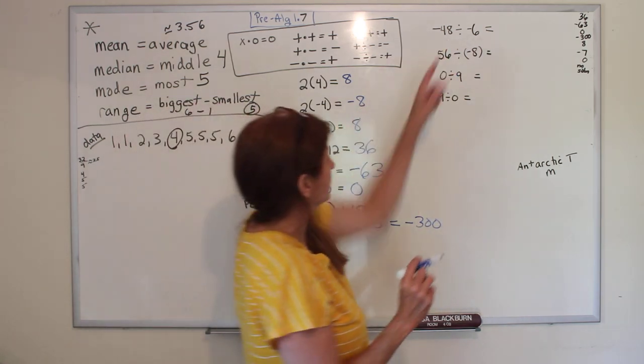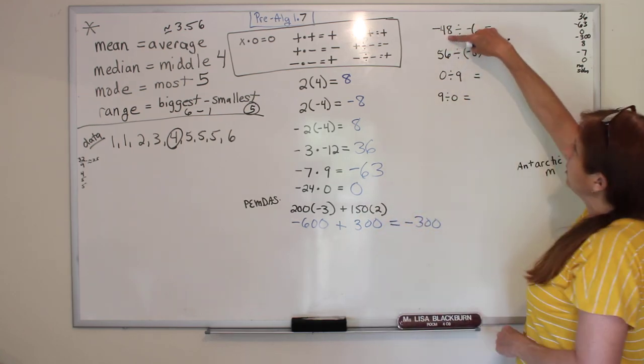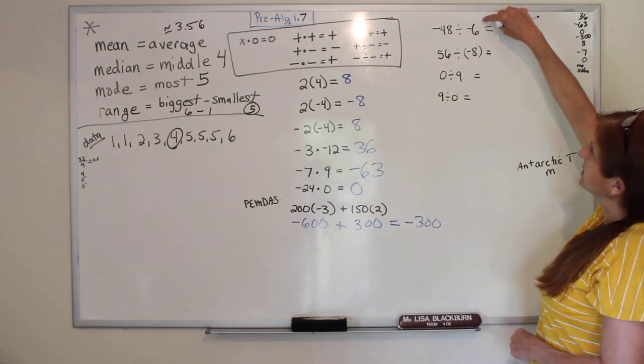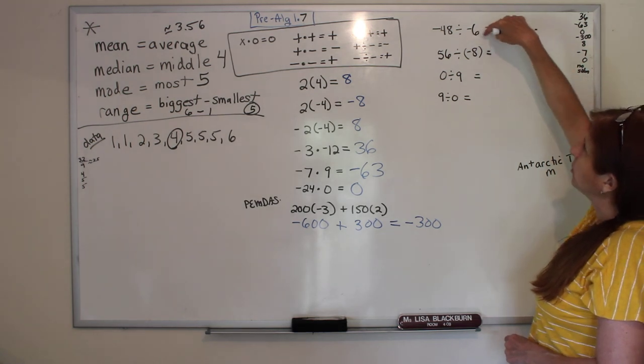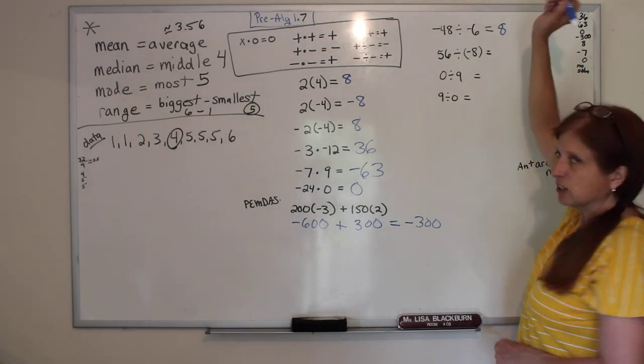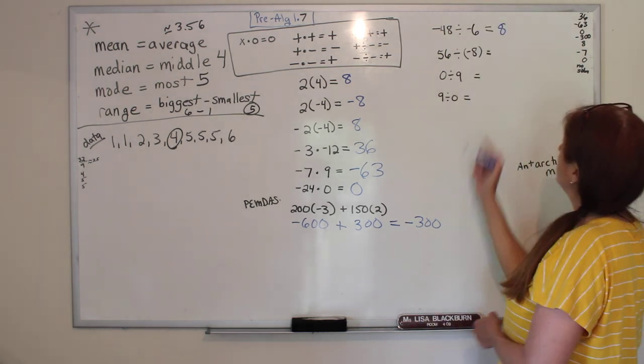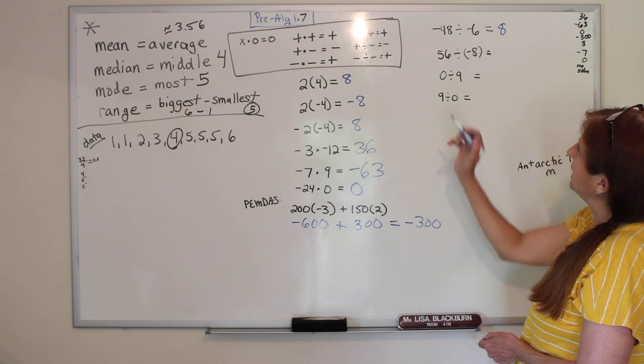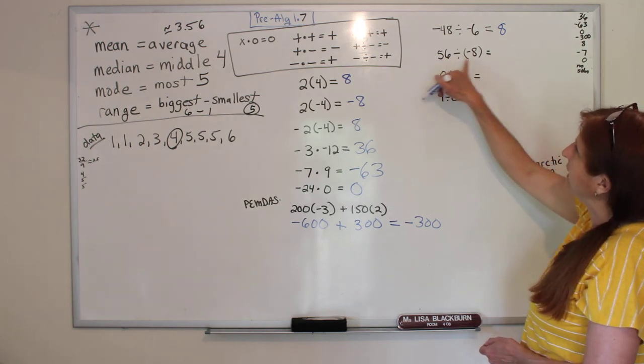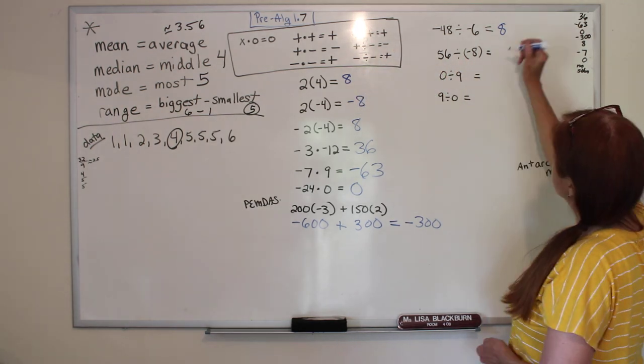All right, let's try this one. Some dividing. Negative 48 divided by negative 6, two negatives will make a positive, and 6 times 8 - 8 is 48, because that's one of the rhyming ones, it's easy to remember - is 8. Okay, 56 divided by negative 8, we have one negative, so the answer is going to be negative, and it's negative 7.